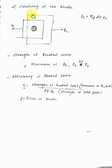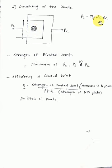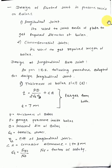Then there is crushing of the rivet — the load crushes the rivet. The crushing load is computed as: cross-sectional area equals D (diameter) multiplied by T (thickness), and then multiplied by the crushing stress.